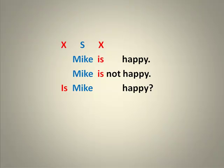For example: 'Mike is happy.' 'Is' is the X word. All X words always appear in negative sentences, so we could say 'Mike is not happy.' X words always begin questions: 'Is Mike happy?' And so the word or words between those two places where we can put 'is' is the subject. In this case, it's Mike.